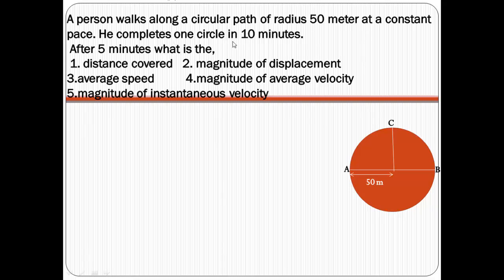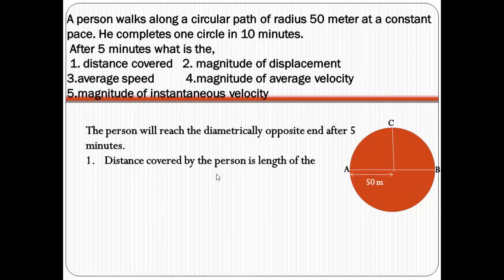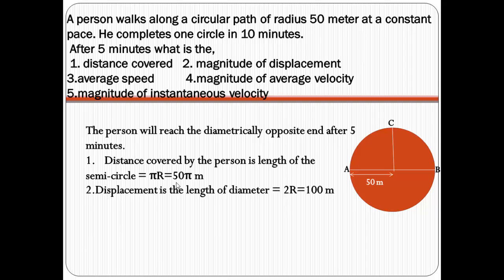It is given that he completes one circle in 10 minutes. So if he starts from A, he comes back to A in 10 minutes. In 5 minutes, he will reach the diametrically opposite end at point B. Distance covered in 5 minutes will be the actual path length of the semicircle, that is pi r. Since radius is 50 meters, that will be 50 pi. Displacement will be the length of the diameter, that is 2r — displacement is the distance between initial and final position — so that will be 100 meters.